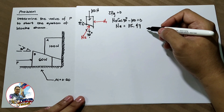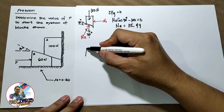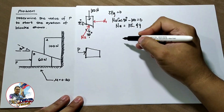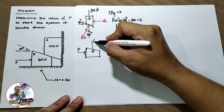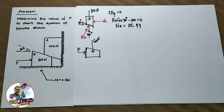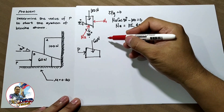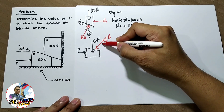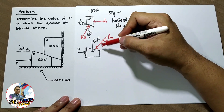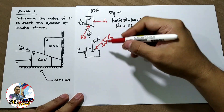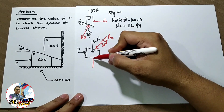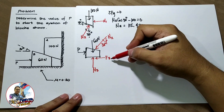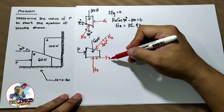Considering now block B, we have the applied force P, the weight of block B which is 60 N, and we apply other forces. We apply N2 here — the angle of N2 with the vertical is 30 degrees. Then we have N3, and then this is F3, the frictional force, which is directed to the left.